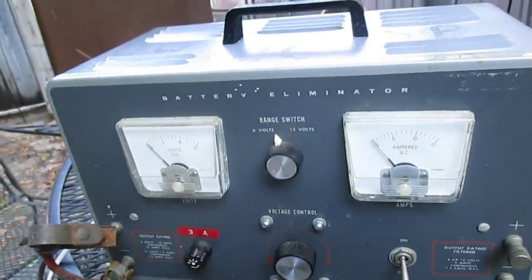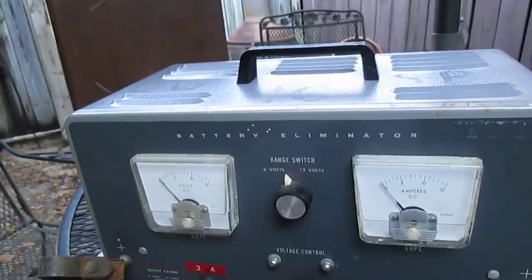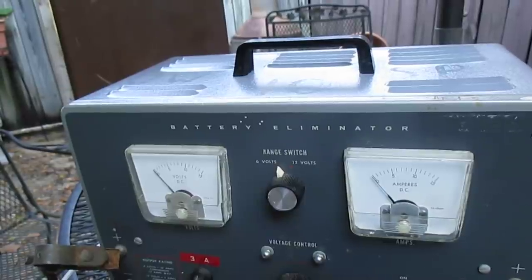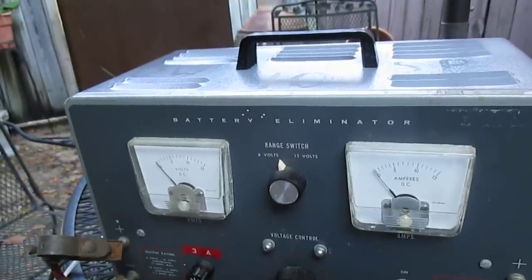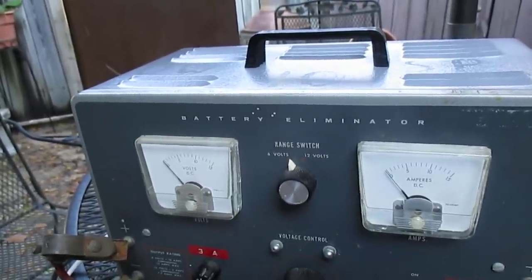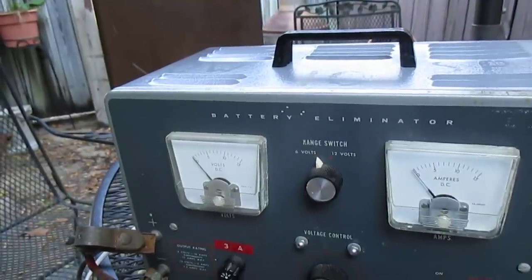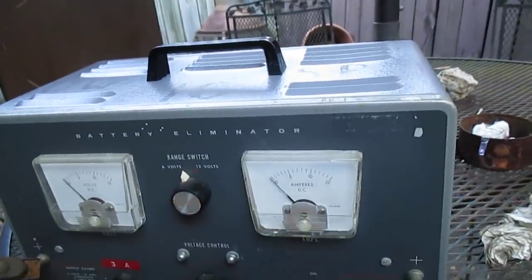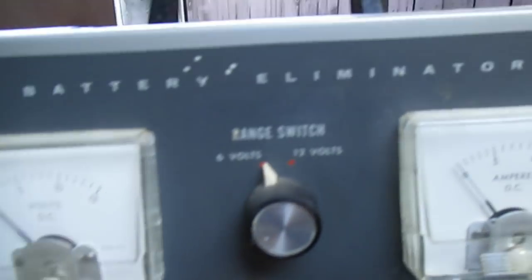These types of sets were designed to operate off of a 6 volt storage battery. We're going to connect this to our battery eliminator and see if this radio does anything. The vibrator chops that voltage up into a pulsating voltage which is then fed to a transformer which steps up the voltage. That voltage is rectified and filtered to provide high DC voltage for the plate voltage of the tubes.